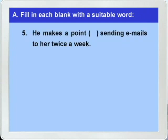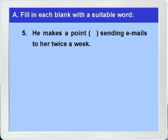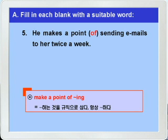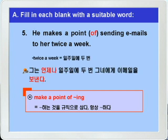다음 5번. 'He makes a point ___ sending emails to her twice a week.' 정답은 of를 쓰면 되죠. 'make a point of -ing'는 '뭐뭐 하는 것을 규칙으로 삼다, 항상 뭐뭐하다' 이런 뜻이죠. 'twice a week'은 '일주일에 두 번' 이런 뜻이니까, 그는 언제나 일주일에 두 번 그녀에게 이메일을 보낸다 이런 말이 되겠습니다.